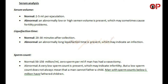Sperm count — Normal: 50–150 million per ml; 0 sperm per ml if the man has had a vasectomy. Abnormal: A very low sperm count is present, which may indicate infertility. But a low sperm count does not always mean that a man cannot father a child. Men with sperm counts below 1 million have fathered children.